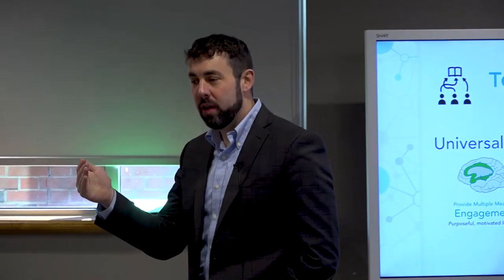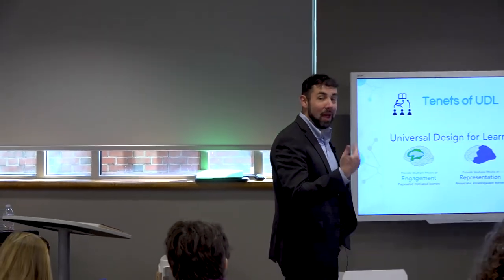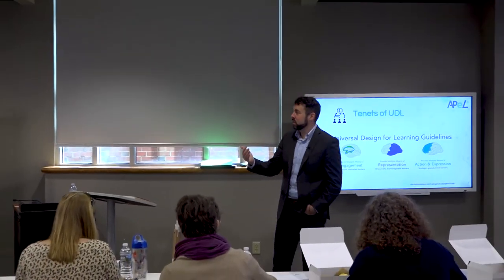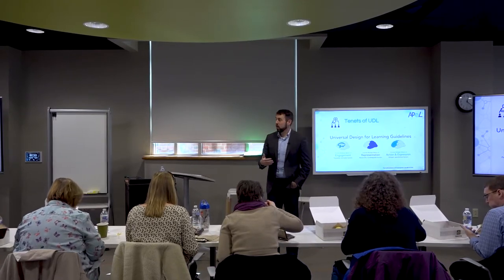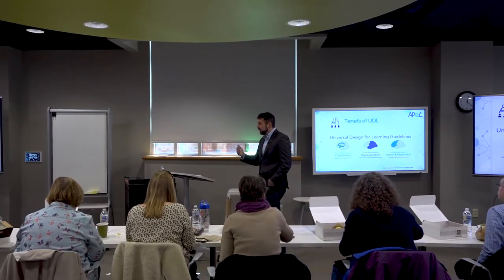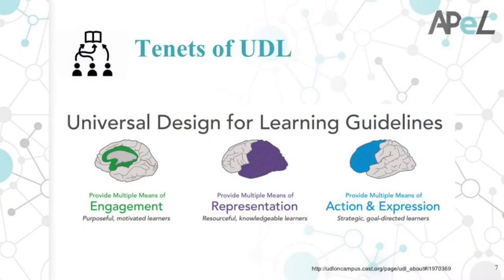Just like there are multiple ways for architecture to promote access to a building and its benefits, there are multiple ways for teaching and learning design to offer access to students who are learning. Those ways are categorized in Universal Design for Learning in three basic tenets: multiple means of engagement, multiple means of representation, and multiple means of action and expression.